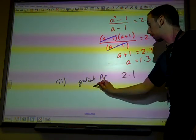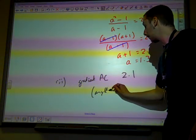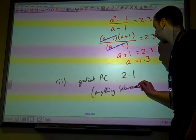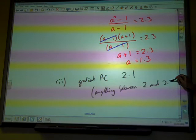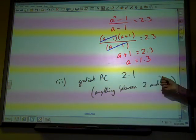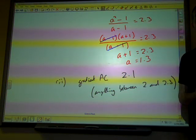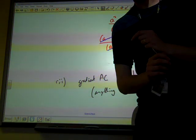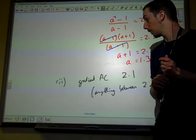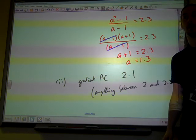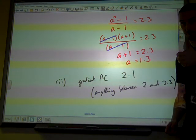We could write anything between 2 and 2.3, not inclusive - not including 2, not including 2.3. Anything in between those would do. That was another big pile of marks. You could write an inequality, but they just wanted one value. It just said state a possible value.